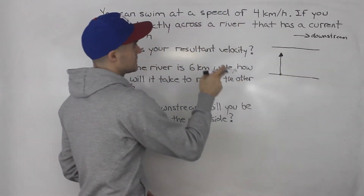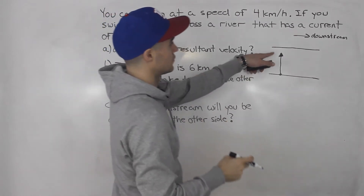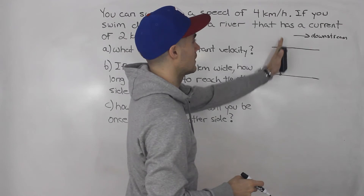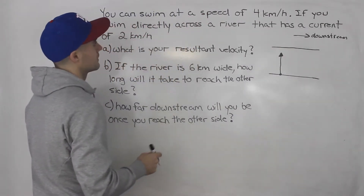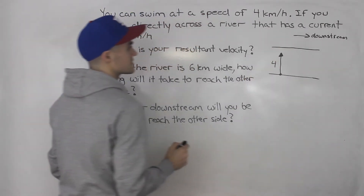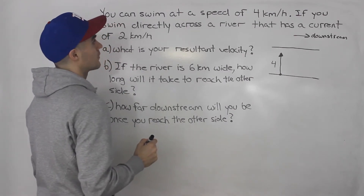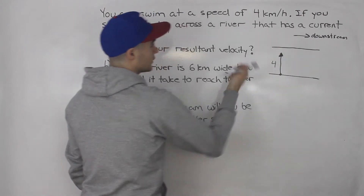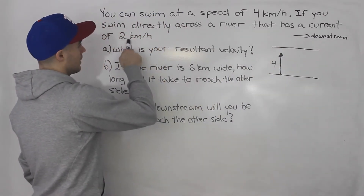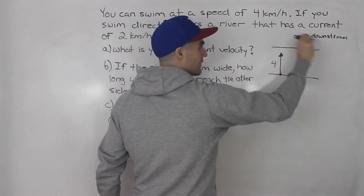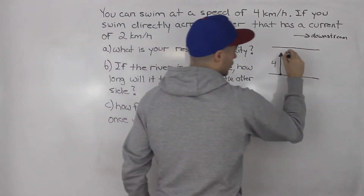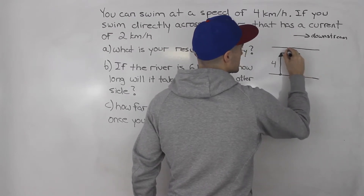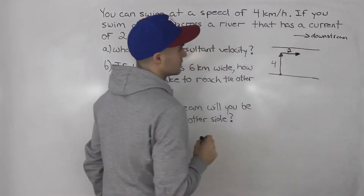Because we're dealing with velocity, we don't have to go right to the end — just draw a vector going directly up. This vector is four kilometers per hour. Then you're going to encounter a current of two kilometers per hour. Since this way is downstream, the current is going this way — so this is two kilometers per hour.